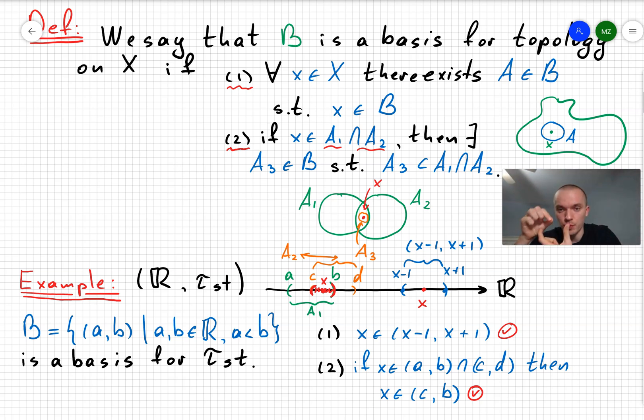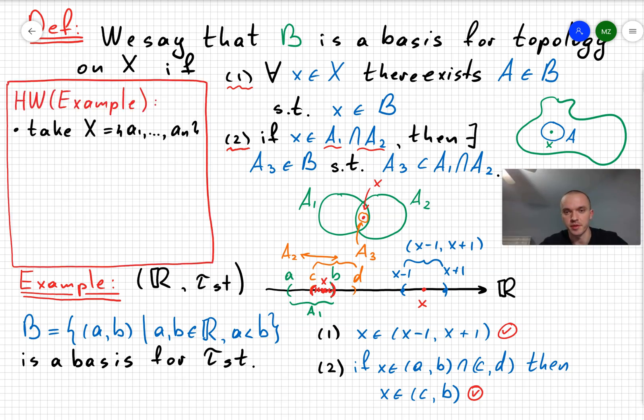So any element which is going to belong to intersection of (a,b) and (c,d) is going to lie inside an open interval (c,b). That's why the second assumption satisfies. That's why we can see B is going to be a basis for our standard topology.